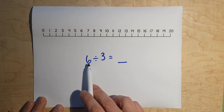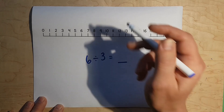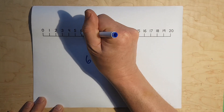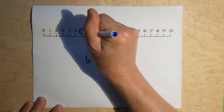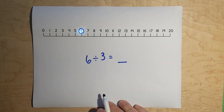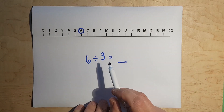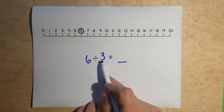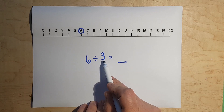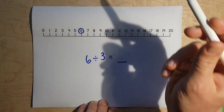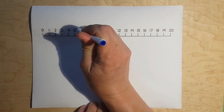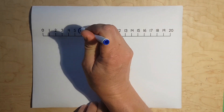What we want to do first is take our dividend, which is number 6, and circle the number 6 on the number line. Then we take the divisor, which is 3, and we skip count by 3. So I'll go 1, 2, 3.